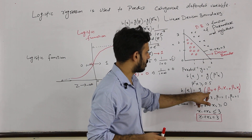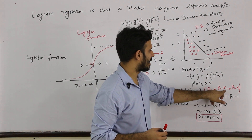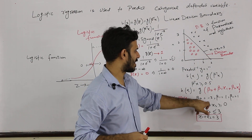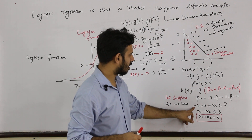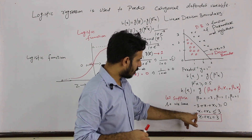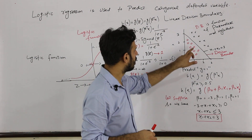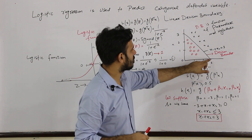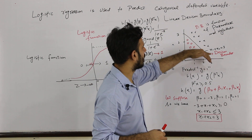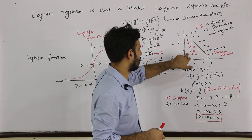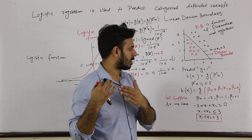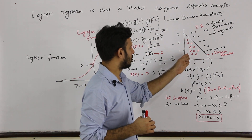If we have a hypothesis beta 0 plus beta 1 x1 plus beta 2 x2, and suppose we take the values of parameters as minus 3, 1, and 1, then our function will look like minus 3 plus x1 plus x2. Finally, we get the decision boundary x1 plus x2 equal to 3, ranging from 3 to 3. This line basically divides the red color points and the black color points. This is how you can have your decision boundary, which will separate both sets of points.